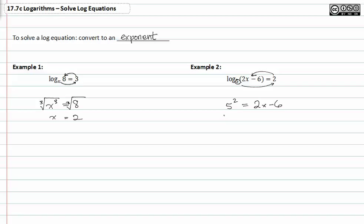Five to the second is twenty-five and that's equal to two x minus six. From here, we can add six to both sides and we get thirty-one is equal to two x.